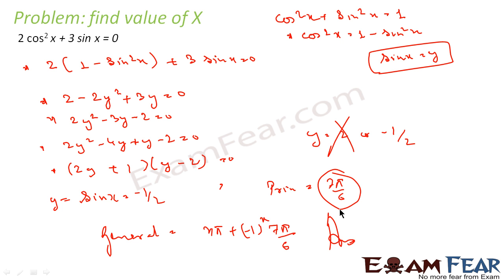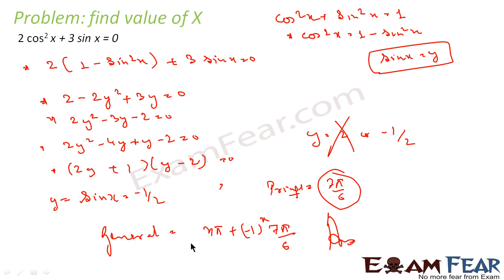What we have done: we first converted cos²x into sin²x, then wrote sin x = y to simplify. We found the quadratic equation, solved it, and got sin x = 2 or −1/2. We ignored 2 because sin x cannot be 2. Then we found the principal solution for sin x = −1/2, which is 7π/6, and then found the general solution.